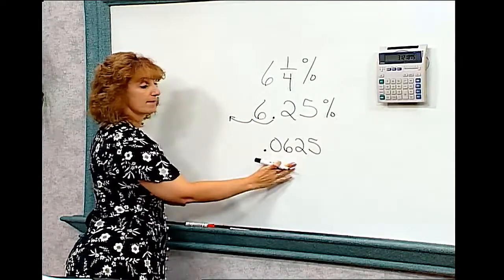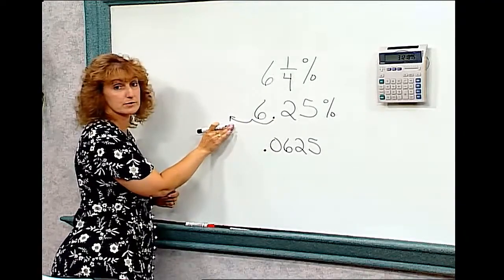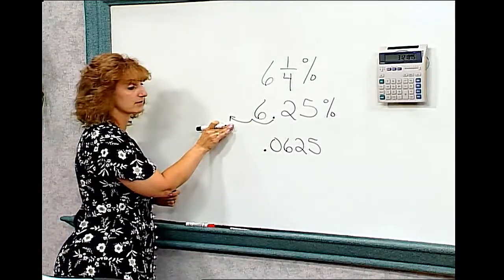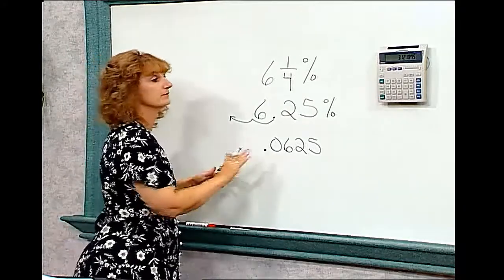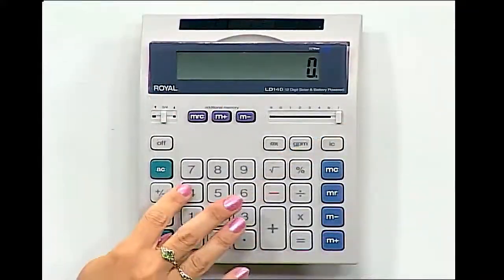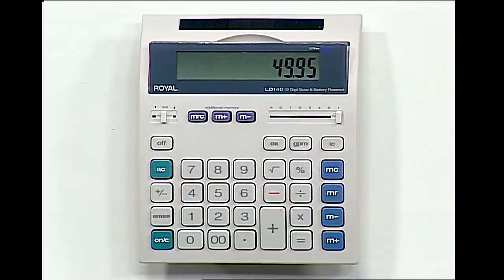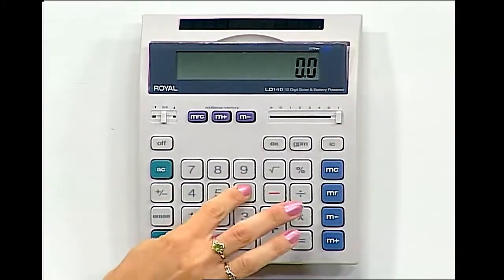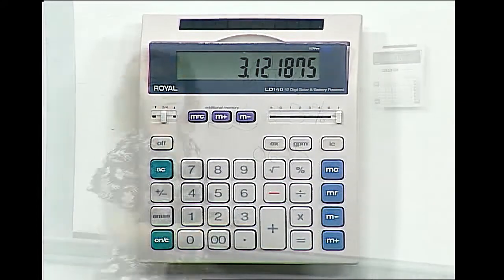To change the percent to a regular decimal, you must divide by a hundred, which means you move that decimal point two places to the left. Now you can use this number on your calculator, and do forty-nine ninety-five times the point zero six two five to get the same answer of three dollars and twelve cents.